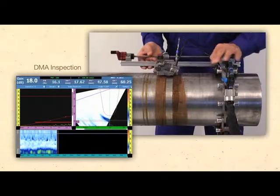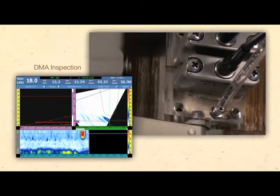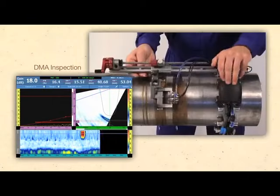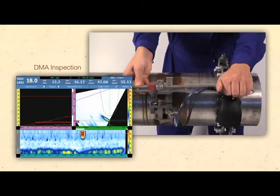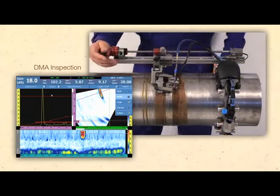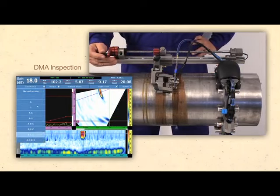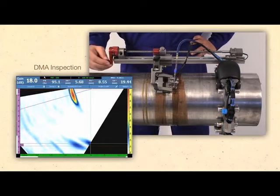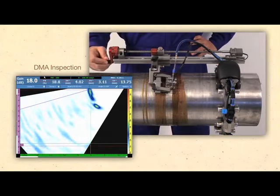For manual encoded inspection, a chain scanner using a single DMA probe performs line scans on an Inconel CRA weld for detection. After a flaw is detected, use of the index raster arm allows the probe to be repositioned for sizing optimization.